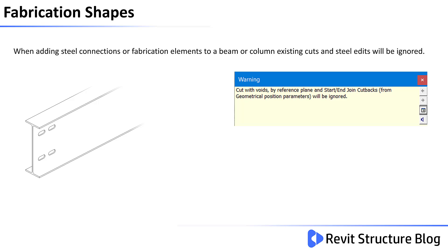When adding steel connections or fabrication elements to a beam or column, existing cuts and steel edits will be ignored. If you try to add a connection, you will notice a warning dialog, as shown in the image below, stating that start and end join cutbacks or cuts made with reference planes will be ignored.